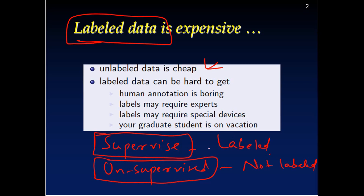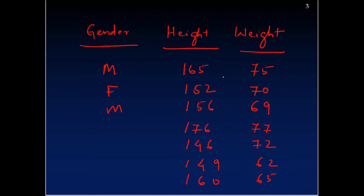Many times we have a small portion of labeled data and there is massive unlabeled data. So can we use both combined in some way to improve the prediction? That's the idea of semi-supervised learning. Here is an example: we have a target variable of gender and have been given the height and weight of individuals. The idea is to predict someone's gender based on height and weight.